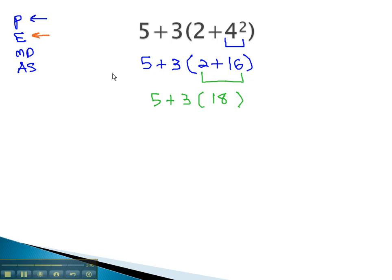Next we would look for exponents, but there are none, so then we'll move on to multiplication and division. Because the 3 is right next to 18, we assume that means multiplication, and we'll multiply 3 by 18. This gives us 5 plus, and 3 times 18 is 54.